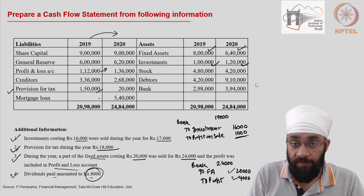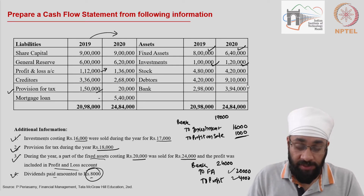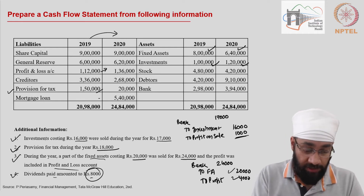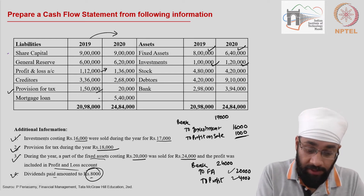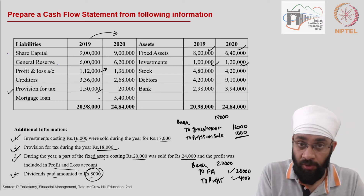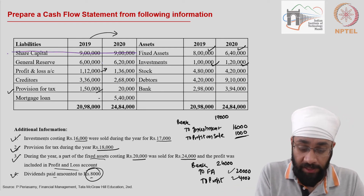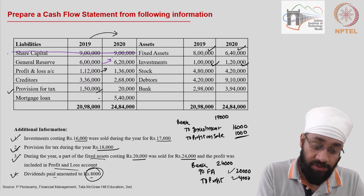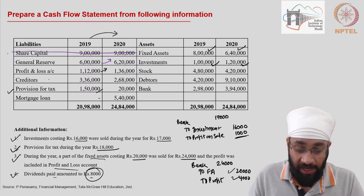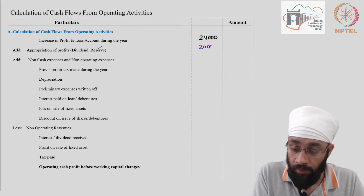This is a continuation of the previous video. We are going to transfer all these amounts to their respective places in the cash flow statement. Starting with the liability side: share capital has no change, so we cross it off. General reserve goes up, meaning money was taken from profit and transferred here — 20,000 to be added back to profit as appropriation reserve.